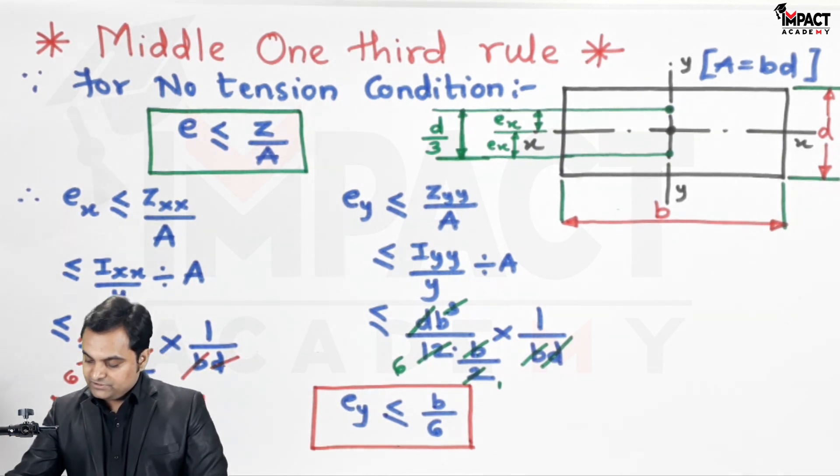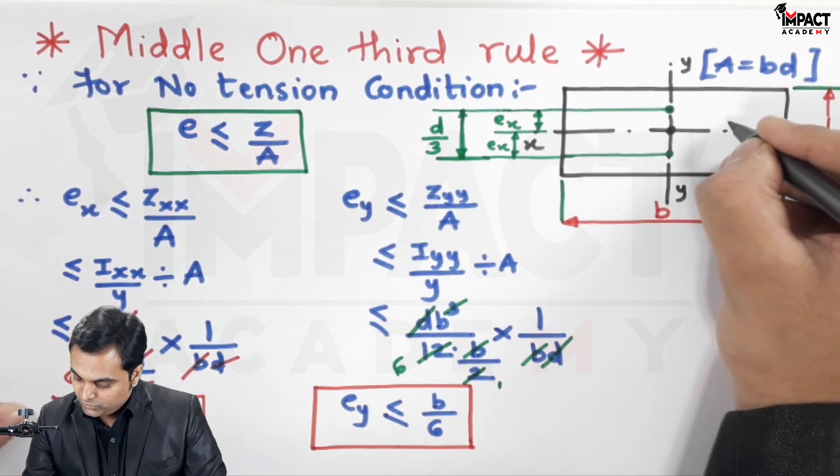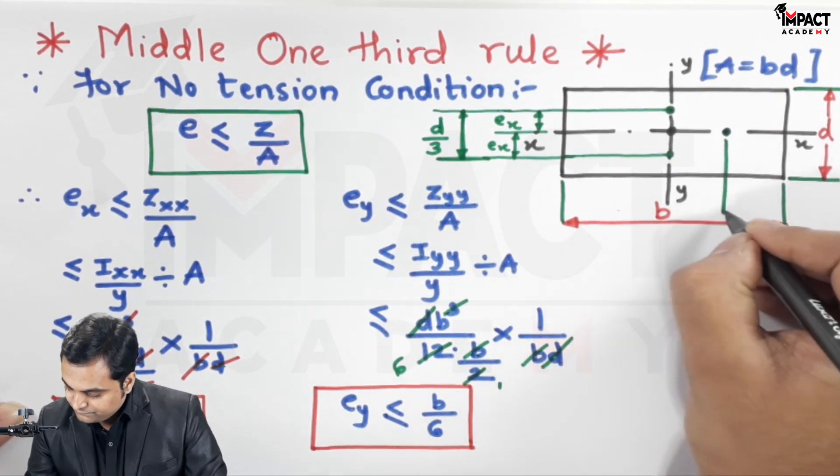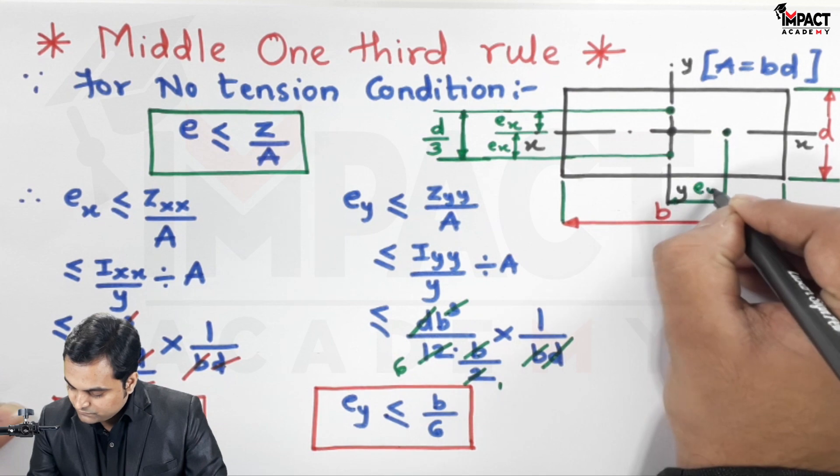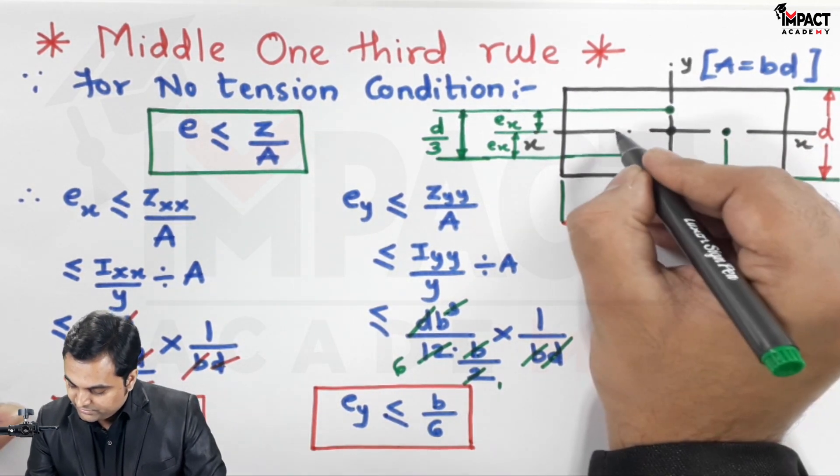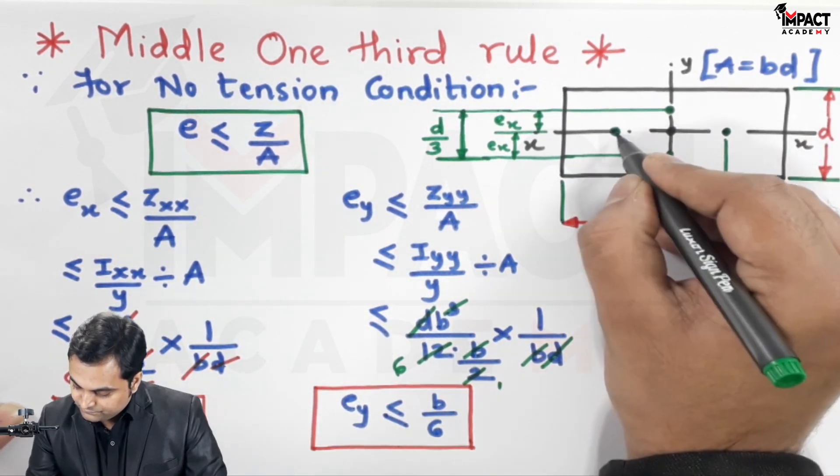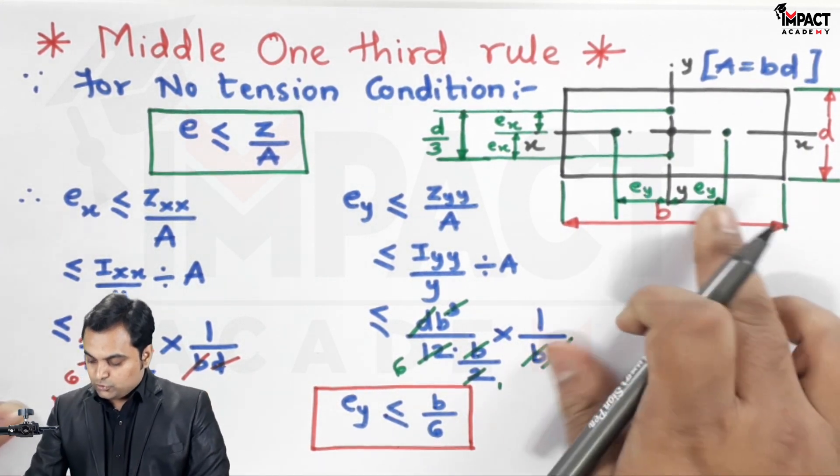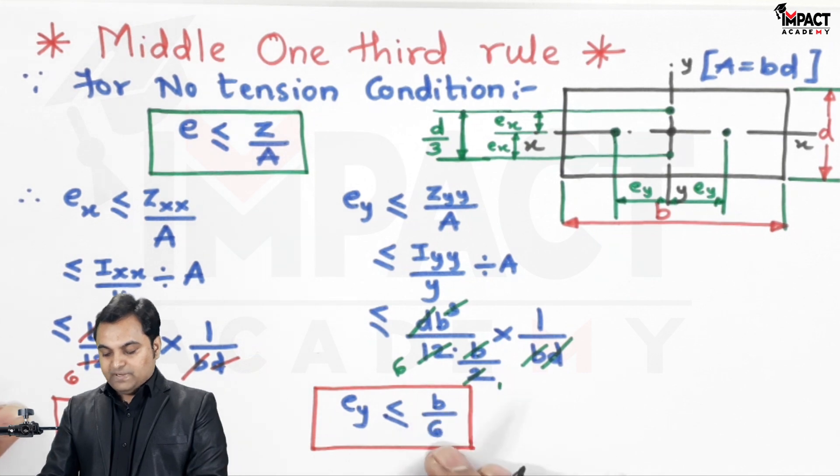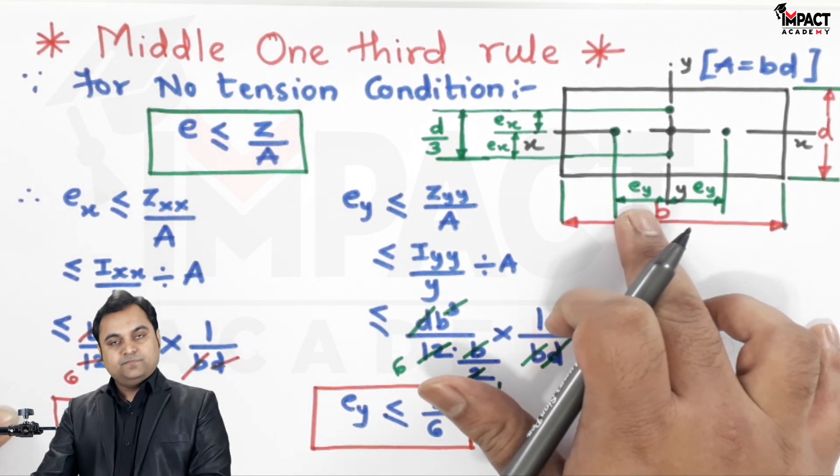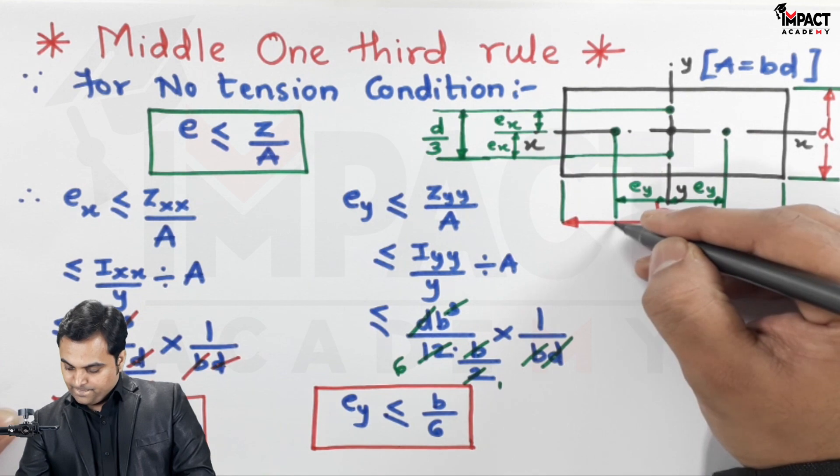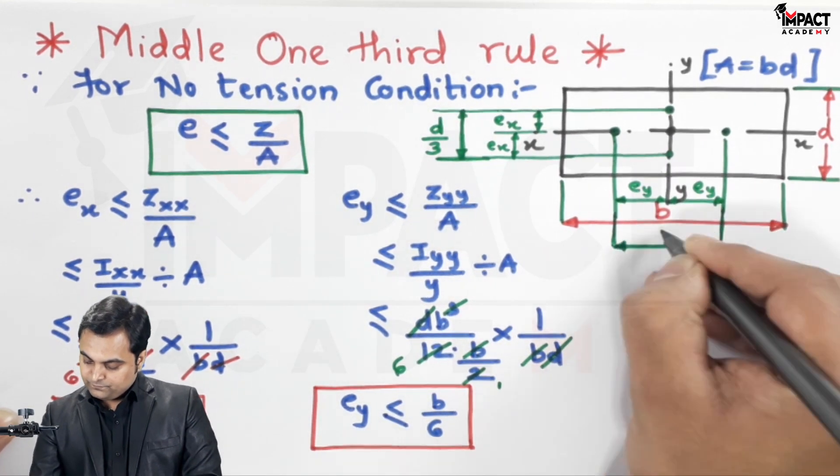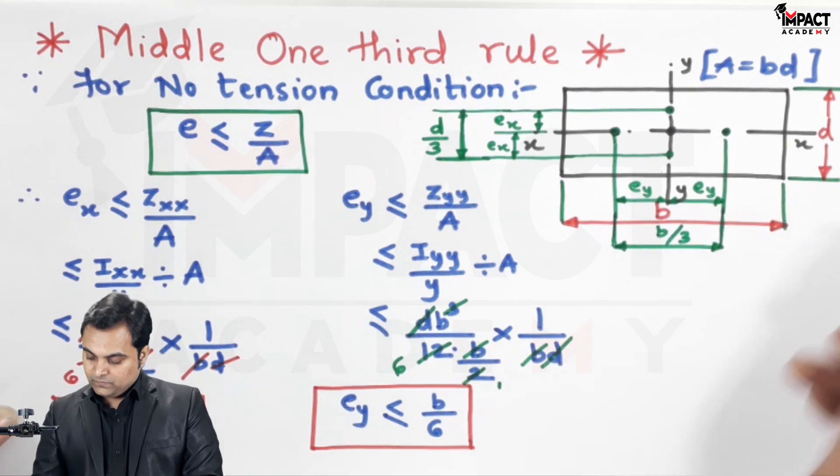This is the eccentricity with respect to y-axis. Measuring the distance from y on one side gives ey = b/6, similarly on the other side. b/6 + b/6 becomes b/3.